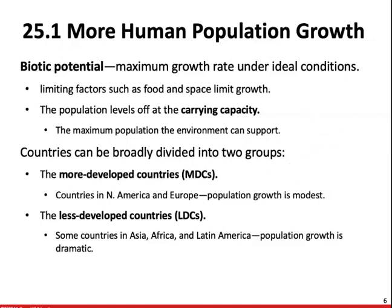Countries can be broadly divided into two groups. More developed countries — like those in North America and Europe — have pretty modest population growth. Between 1850 and 1950, they doubled their populations due to modern medicine and improved socioeconomic conditions. A decline in the death rate was eventually followed by a decline in the birth rate, resulting in only modest growth since 1950 at roughly 0.3%. The United States, however, has not leveled off — it's now at 320 million and continues to increase, mostly due to immigration rather than an increased birth rate.